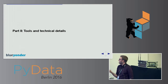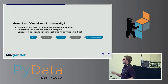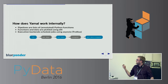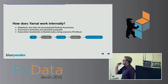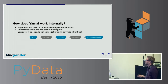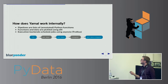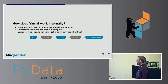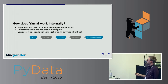So how does Yamal work internally? Pipelines are just lists of Python functions. We pickle the functions and all the data using Dill, because it's more powerful than cPickle. We schedule jobs using async.io — or in our case troll, since we're still using Python 2.7. So all things get serialized and we have this async.io mechanism for scheduling jobs.